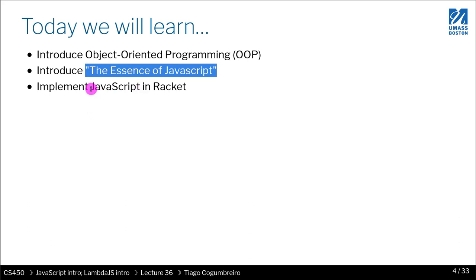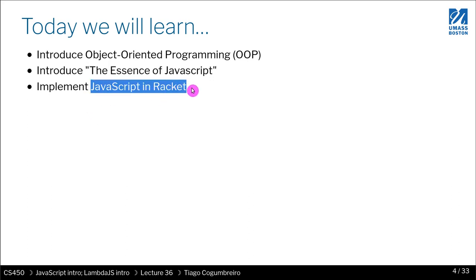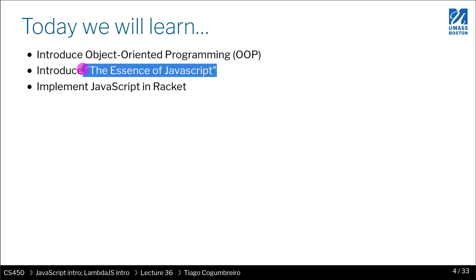Finally, what we're going to do is build a compiler where you will learn how to compile and convert JavaScript into this LambdaJS offered by the authors of the paper, 'The Essence of JavaScript'. All of this we're going to continue doing in Racket, our favorite programming language.